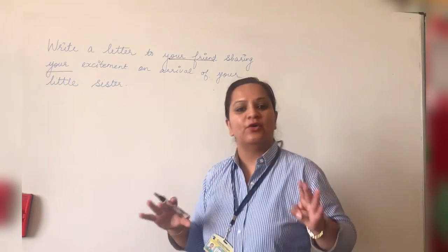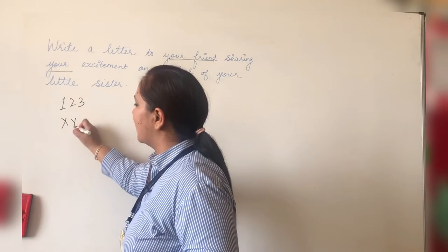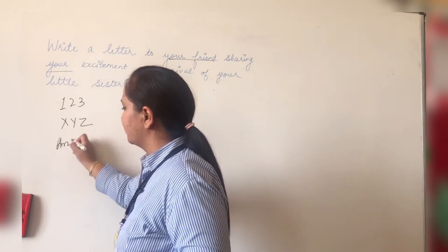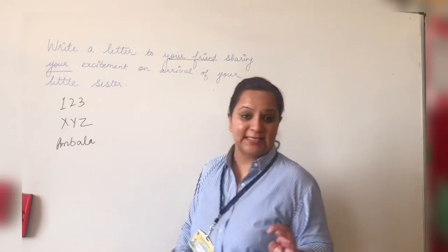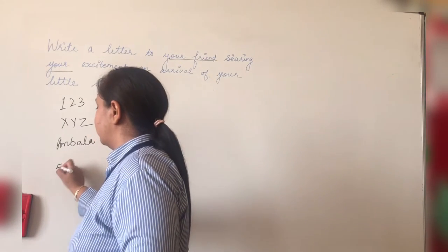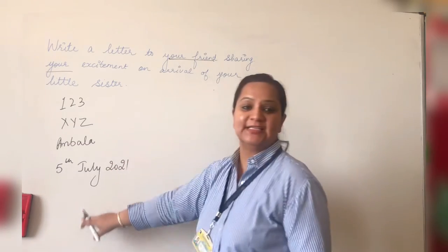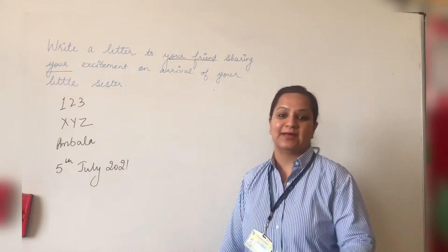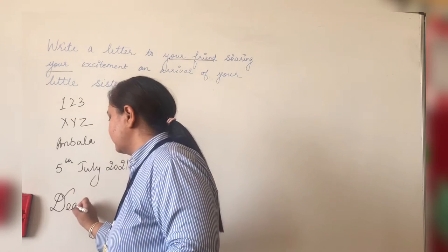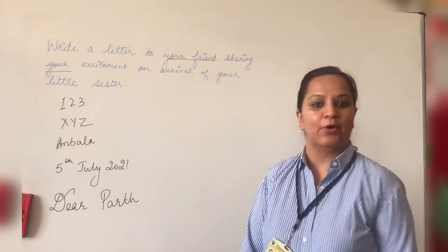I always say if you don't know how to write an address, always write 1, 2, 3, X, Y, Z. You can write any city, say Amala, followed by the date. Always keep in mind we always write the full date — for example, today is 5th of July 2021. Then we know that we have to write a salutation. What is a salutation? To whom you are writing, we write greetings. So you are writing to your friend — say, like I write 'Dear Parth.' I am going to address this letter to a boy whose name is Parth.